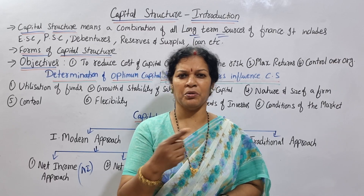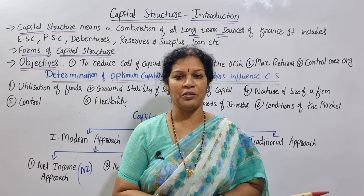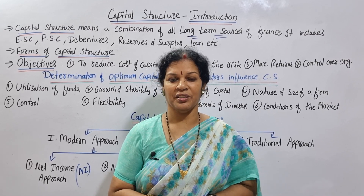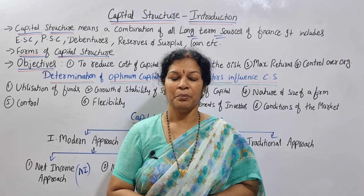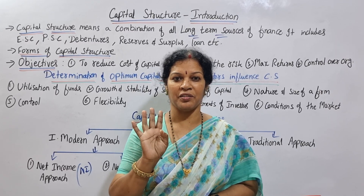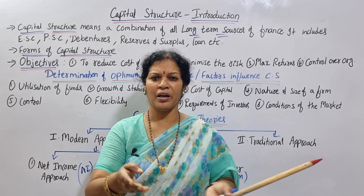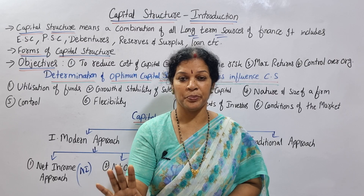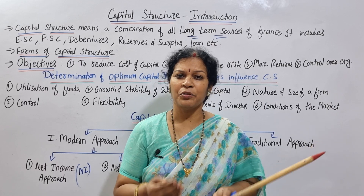Capital is accumulated through shares, preference shares, and debentures. Loans — how much capital is accumulated? What is capital structure? We have two ways to get capital: long-term capital and short-term capital. We will talk about long-term capital only, and how much of the capital structure has to be in the capital.